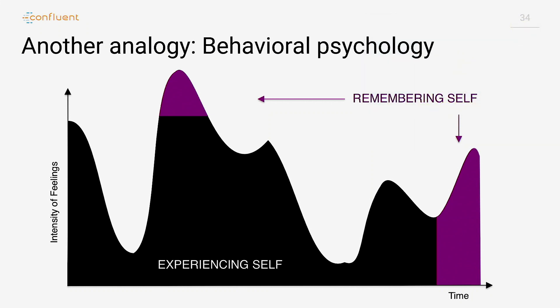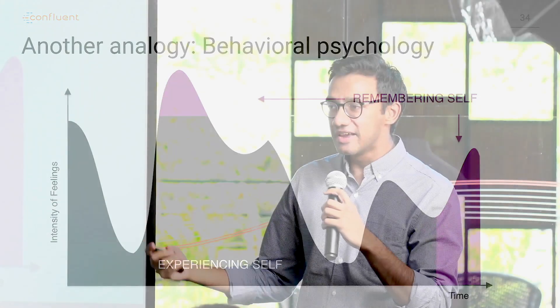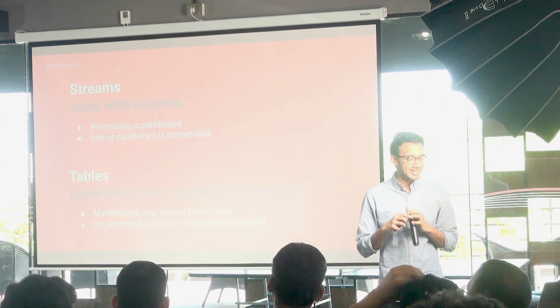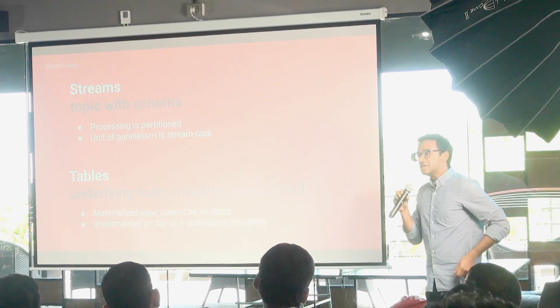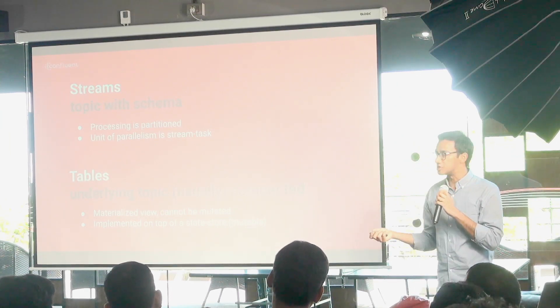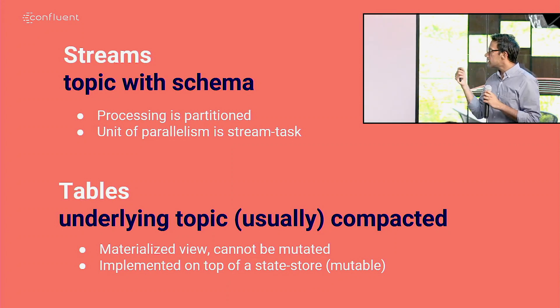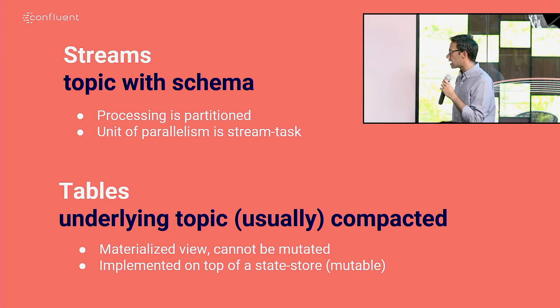If you're into behavioral psychology and are developing consumer applications, think of it this way: there's an experiencing self and a remembering self. If you go to a two-hour concert, you're spending the entire two hours there, but you don't remember all of it — you remember a finite set of things. That's typically what these tables will store. Just like the storage is partitioned, the processing is also partitioned. There's a unit of parallelism in Kafka Streams called a stream task, with a one-to-one mapping between a stream and a partition. As you add more partitions, you can scale the number of streams in your applications.